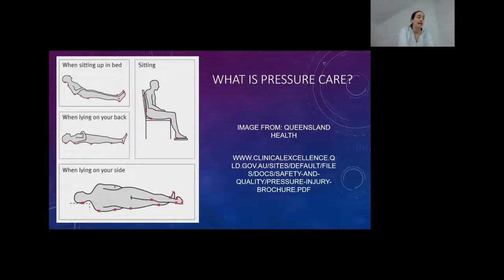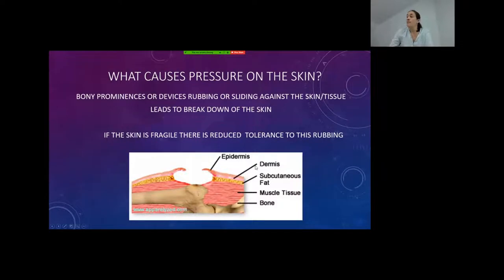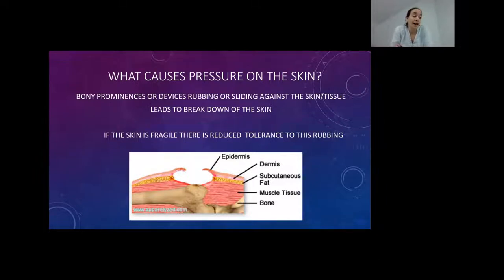Pressure injury was previously known as pressure ulcer, pressure sore, or bed sores — we don't use that terminology anymore, though some people still use it interchangeably. What causes pressure care issues on our skin? Bony prominences or devices rubbing or sliding against the skin tissue lead to breakdown of that skin. If the skin is fragile there is also reduced tolerance to this rubbing. It might be fragile due to poor nutrition, inability to attend to hygiene, or other lifestyle or underlying health diagnoses.